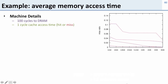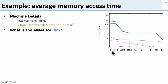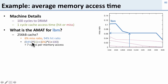Let's calculate AMAT for different applications and cache sizes. Our machine takes 100 cycles to access DRAM and one cycle to access the cache. For LBM with a 256 kilobyte cache, the miss ratio is about 6%, so the hit ratio is about 94%. That means 94% of accesses take one cycle, and 6% take one cycle plus 100 cycles to access DRAM. On average, that's seven cycles per memory access.